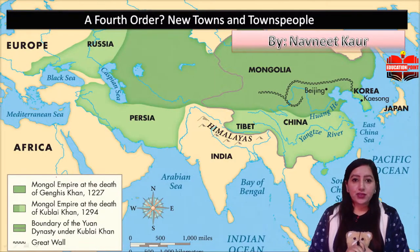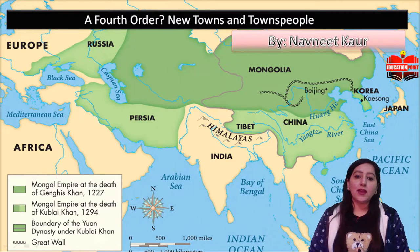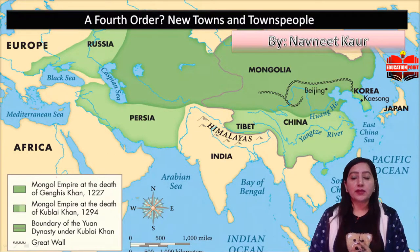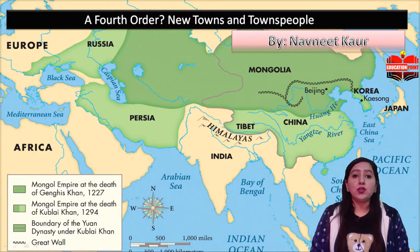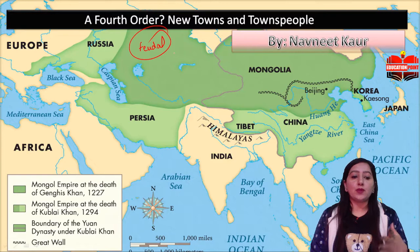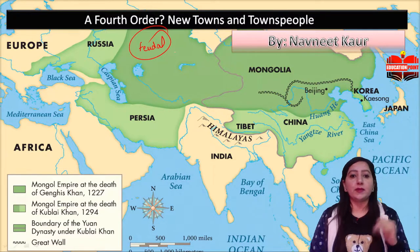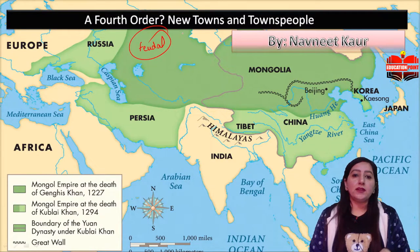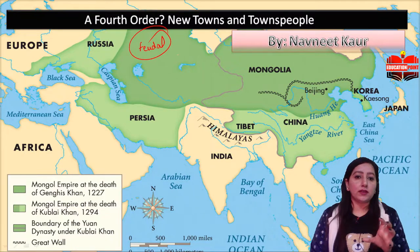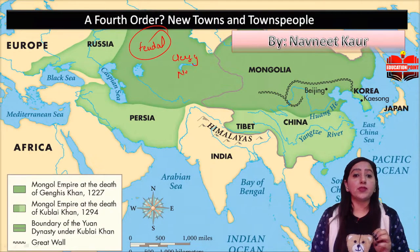Hi everyone, welcome to Education Point. We are covering Class 11th NCERT Chapter 6, which is about a different type of society — we were talking about cultural ties. We have mainly talked about feudal society and its three hierarchies: clergy, nobility, and peasants, and the relationship ties between them. We have seen these three orders.